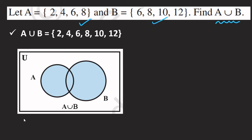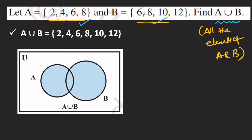A union B means all the elements of A and B combined. All elements are taken: {2, 4, 6, 8, 10, 9} — repeated elements are written only once. In the Venn diagram, the union means shading the total part — the entire region covered by A and B.